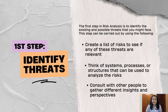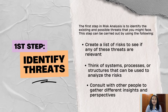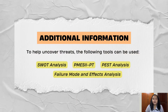The first step in risk analysis is to identify the existing and possible threats that you might face. This step can be carried out by: first, creating a list of risks to see if any of these threats are relevant; second, thinking of systems, processes, or structures that can be used to analyze the risk; and third, consulting with other people to gather different insights and perspectives. To help uncover threats, the following tools can be used: SWOT analysis (strengths, weaknesses, opportunities, and threats), Failure Mode and Effects Analysis, PMESIIPT (political, military, economic, social, information, infrastructure, physical environment, and time), and PEST analysis (political, economic, social, and technological).